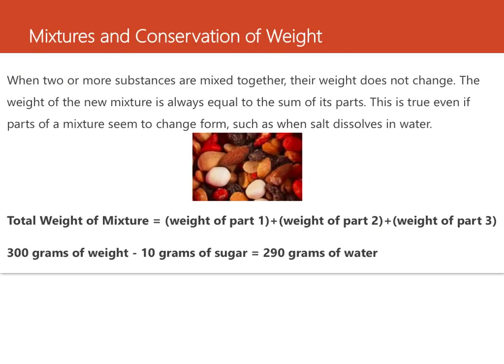Now let's talk about mixtures and conservation of weight. When two or more substances are mixed together, their weight does not change. The weight of the new mixture is always equal to the sum of its parts — this is true even if parts of a mixture seem to change form, like when salt dissolves in water. For example, with trail mix — a mixture of nuts and dried fruit — each piece has the same weight as it did before all the pieces were mixed together. If there are three parts in a mixture, the total weight is simply the sum of the three parts added together.